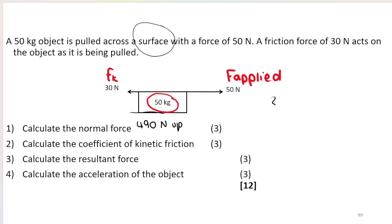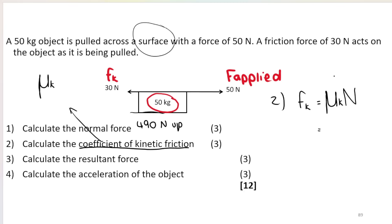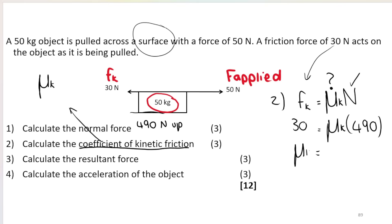The next question asks for the coefficient of kinetic friction. Using the formula, kinetic friction equals the coefficient of kinetic friction multiplied by the normal force. We know friction is 30 newtons and the normal force is 490 newtons, so the coefficient equals 30 divided by 490, which is approximately 0.06. Note that the coefficient of kinetic friction is unitless.